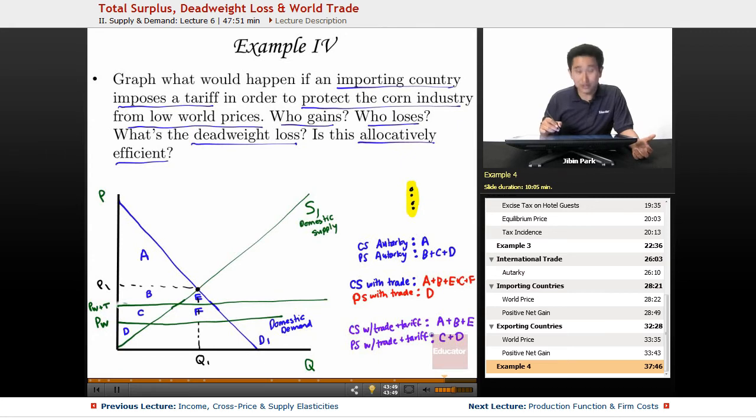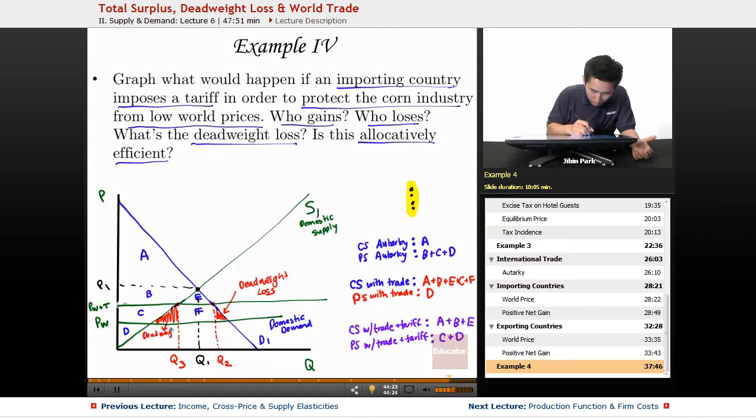Now this doesn't come without consequences though because when you have the tariff you have some consequences. So what ends up happening is that you end up having less trade. So let's call this Q2 here and Q3 here. And so this area here is the deadweight loss. So this area is also deadweight loss. Because the new area of trade, let's say this is Q4 here and this here is Q5.